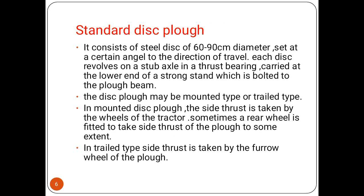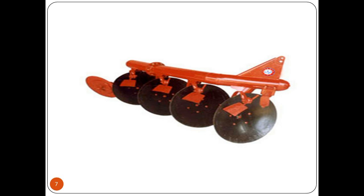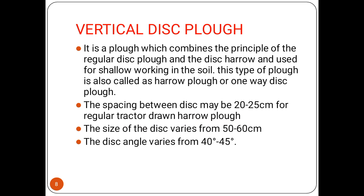The standard disk plow consists of steel disks of 60 to 90 centimeter diameter, set at a certain angle to the direction of travel. It revolves on a stub axle in thrust bearings and is carried at the lower end of a strong stand which is bolted to the plow beam. The disk plow may be mounted or trail type. In the mounted type, the side thrust is taken by the wheels of the tractor, and sometimes a rear wheel is fitted to take the side thrust to some extent. In the trail type, side thrust is taken by the furrow wheel of the plow.